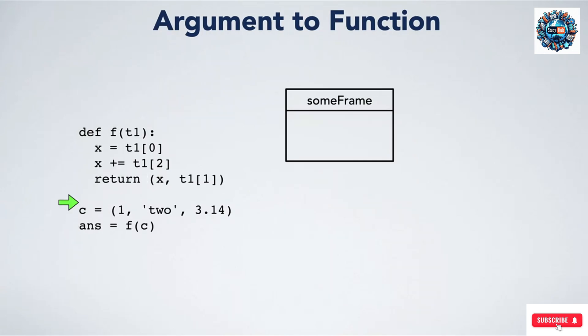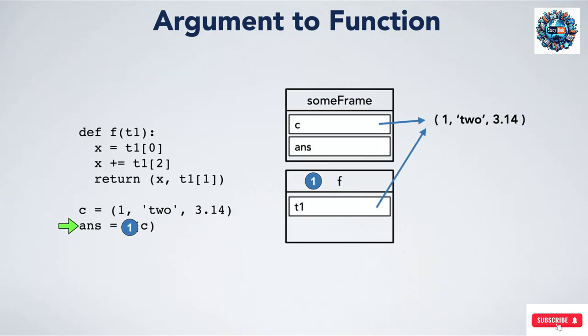We also want to take a moment to see passing a tuple as a parameter to a function. We start with our previous example tuple assigned to variable C in our current frame. Now we are about to call function f and pass in C. We create a frame for F and copy the value from C's box. As C's box is an arrow, we copy that value. T1 inside of F's frame points at the same tuple in the heap.